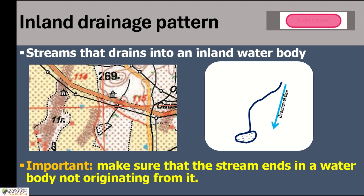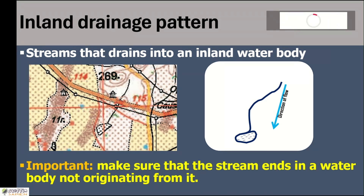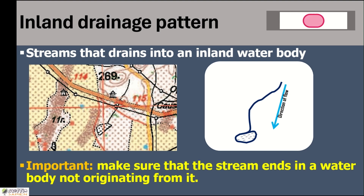We can verify this by looking at the height differences. When we get the difference in height between two ends of the river, we will understand the direction of the flow. Based on that, we can determine whether the stream is flowing into the lake or flowing outward from the lake. So we have to be very careful while identifying inland drainage pattern.